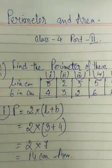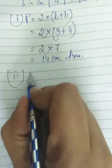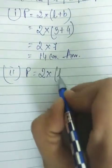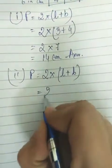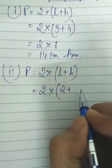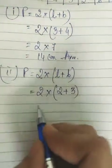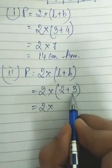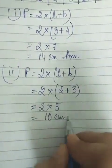Clear students? Now let us do the next one. Perimeter of a rectangle — formula is 2 into (length plus breadth). In the next question, length is 2 cm and breadth is 3 cm. So it will be 2 into (2 plus 3), which is 2 into 5, giving 10 centimeters as the answer.